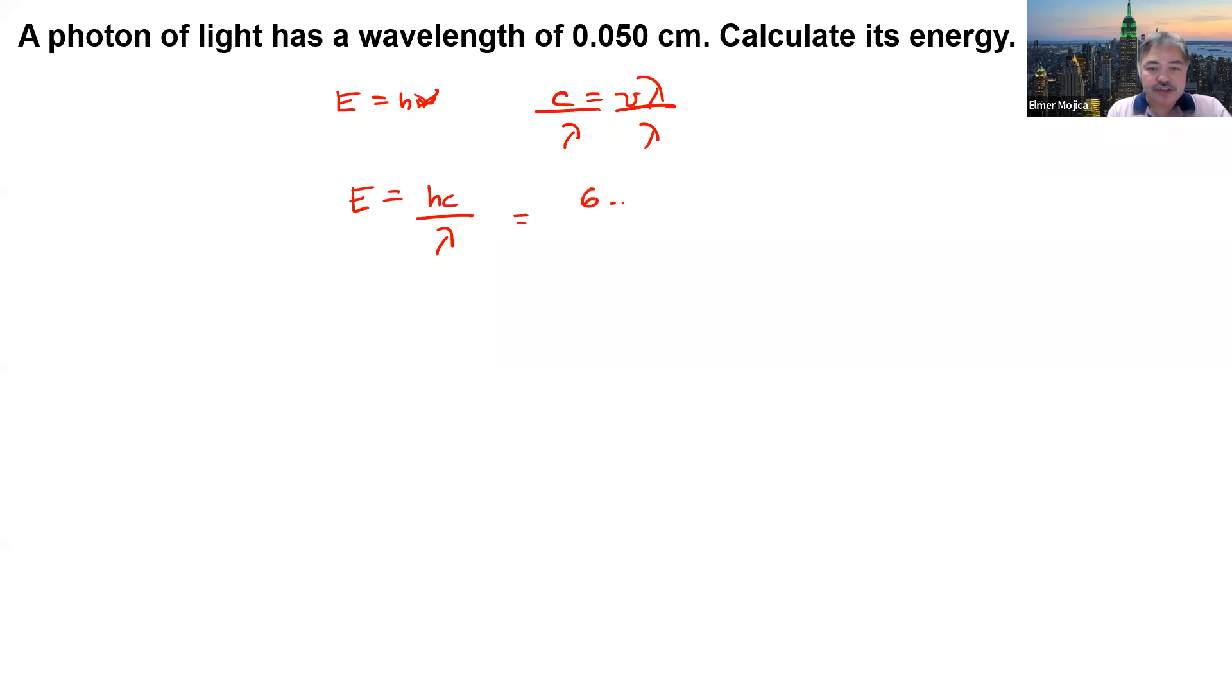It with the Planck's constant 6.63 times 10 to the negative 34 joules per second, and then 3.00 times 10 to the 8 meters per second, divided by 0.050 centimeter.